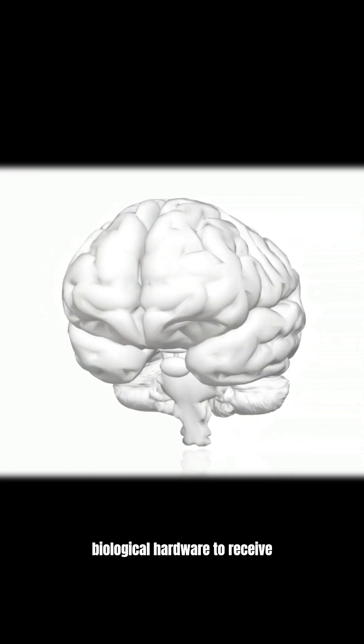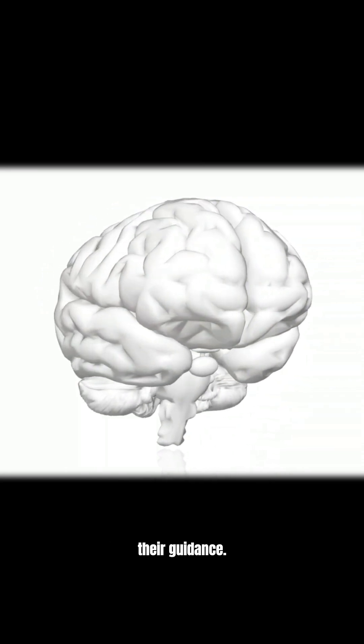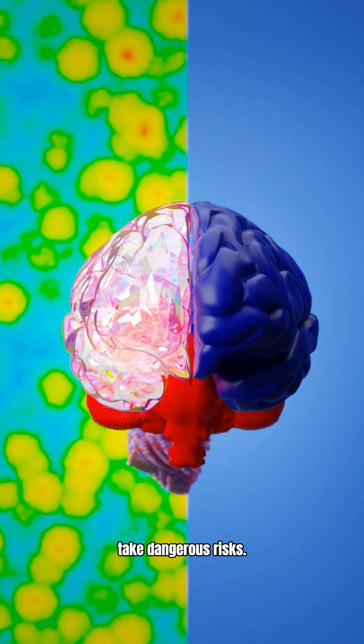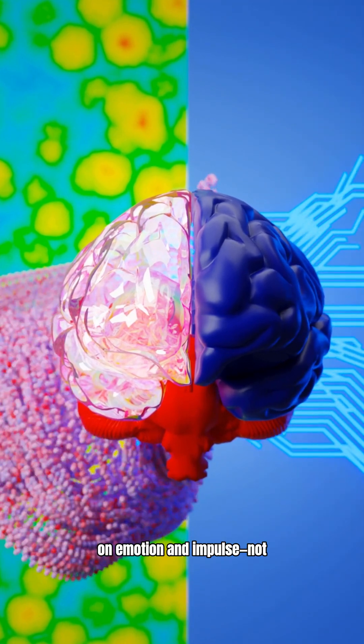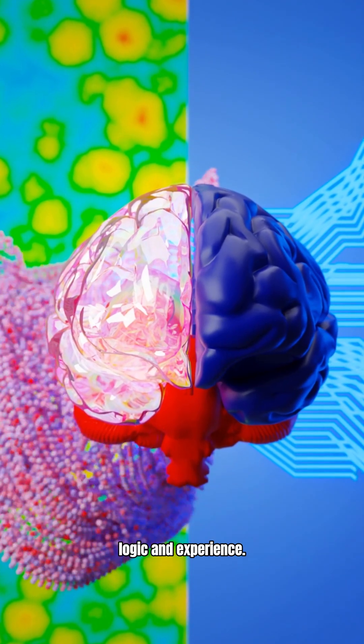You literally lacked the biological hardware to receive their guidance. This is why teenagers take dangerous risks. Why you thought you knew everything. Your brain was running on emotion and impulse, not logic and experience.